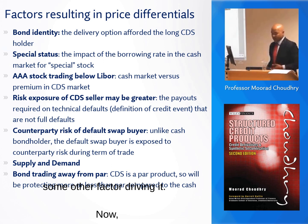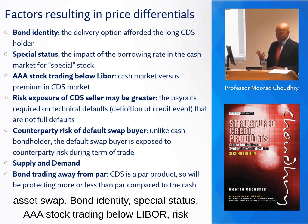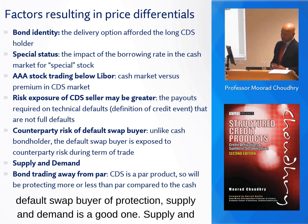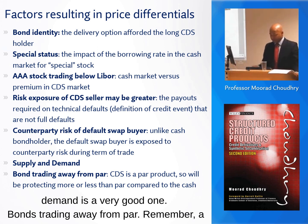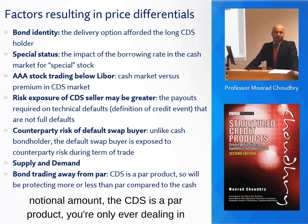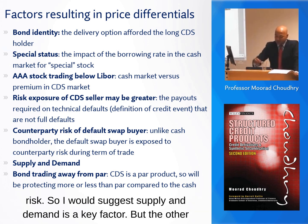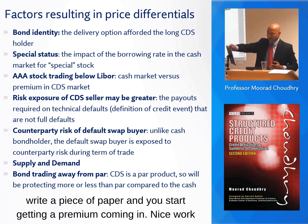Here is a set of factors — more relevant pre-crash — that might explain why the CDS trades above the asset swap: bond special status, triple-A stock trading below LIBOR, counterparty risk of the default swap seller, credit default swap buyer protection, and supply and demand. Supply and demand is a very significant one. Also important: bonds trading away from par. The CDS is a par product — you're dealing in notional amounts — whereas a bond trading above or below par has less cash value at risk. Supply and demand is a key factor.